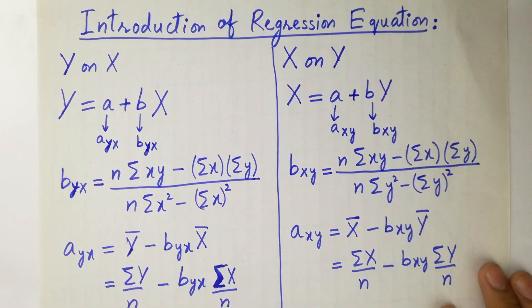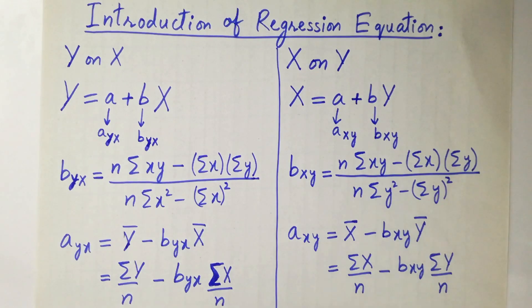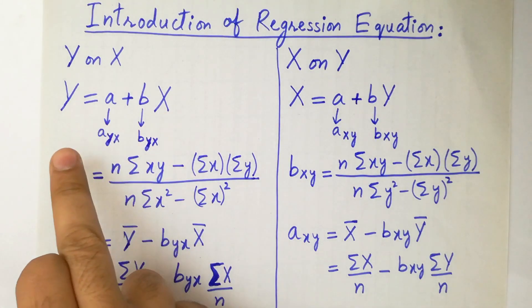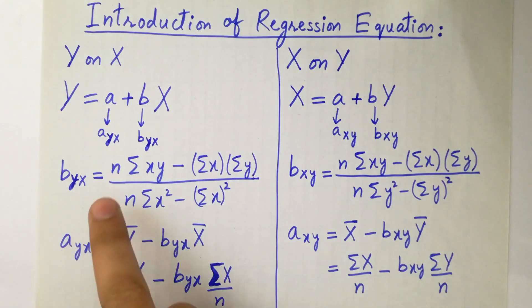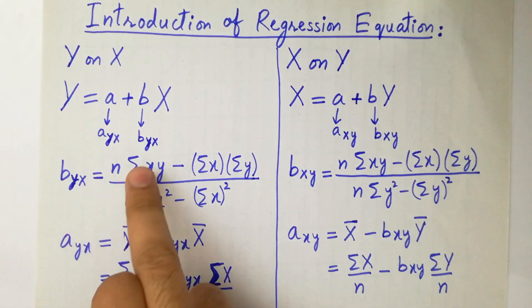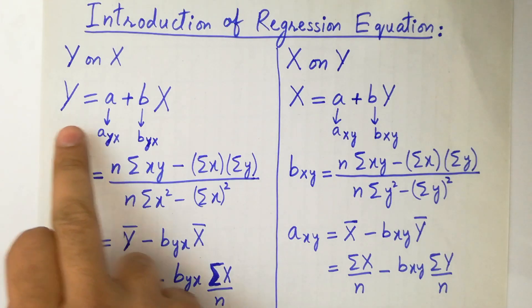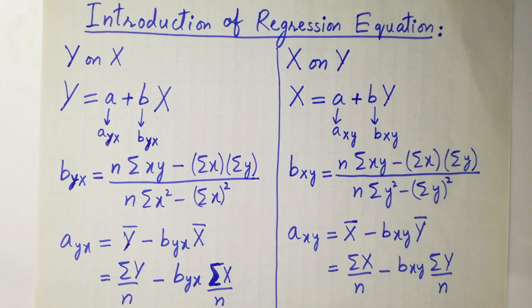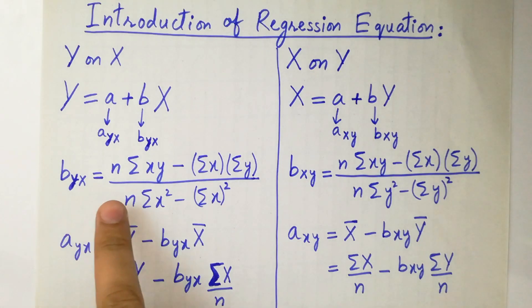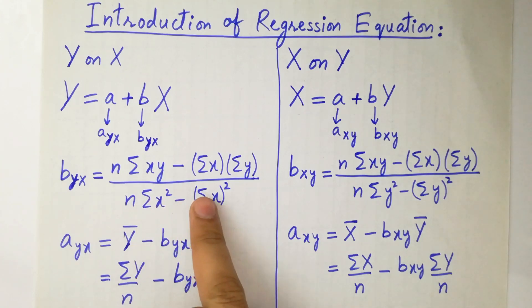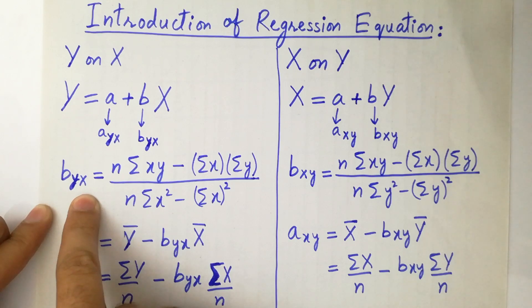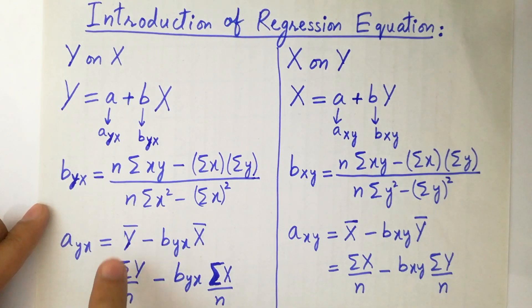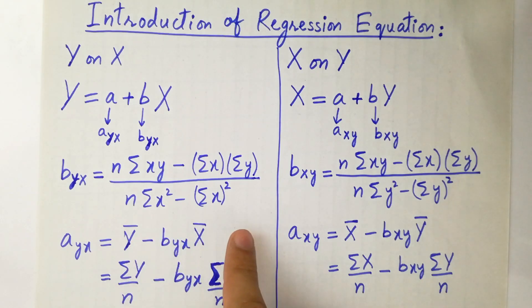First we discuss the regression equation y on x: y = a + bx. This is also written as a_yx and b_yx, where y is first and x is second. The formula for b_yx is: n·Σxy minus Σx·Σy, divided by n·Σx² minus (Σx)². Just focus on it — the second variable is x, so we write x in the denominator.